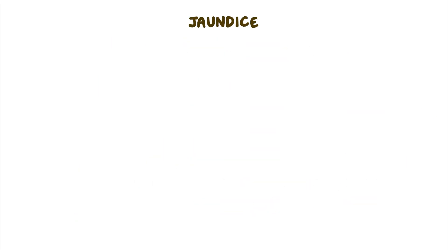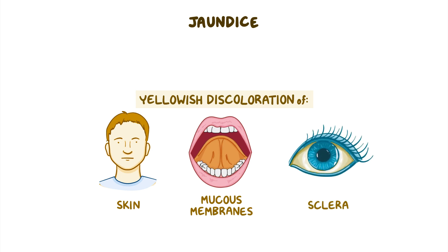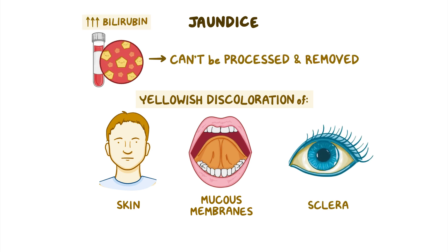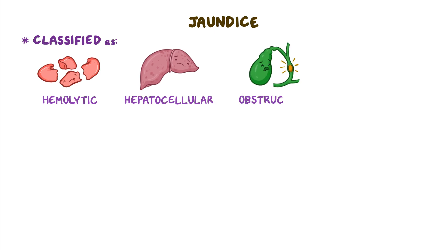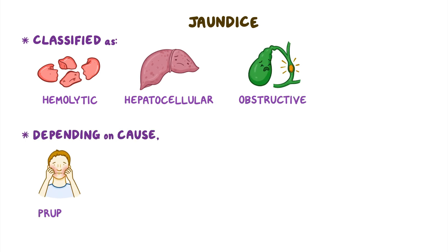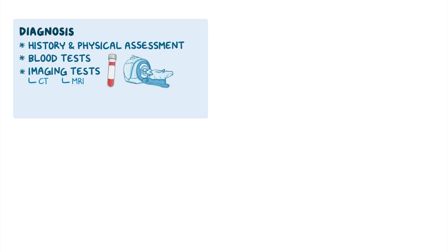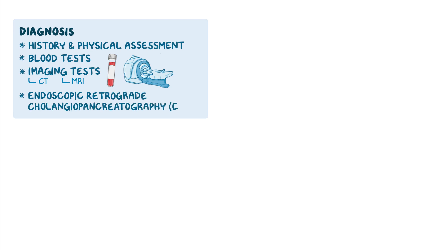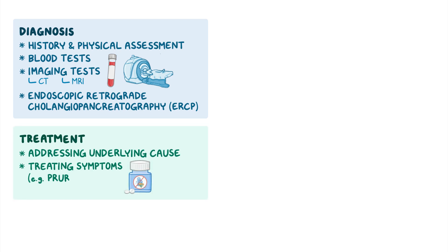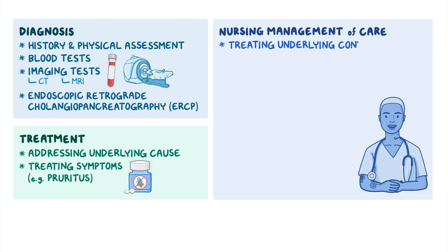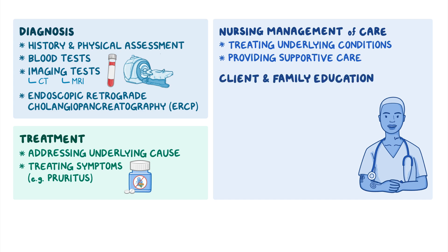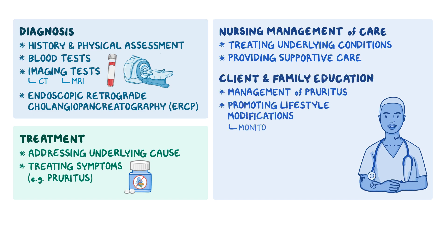As a quick recap, jaundice is characterized by yellowish discoloration of the skin, mucous membranes, and the sclera that happens when excess bilirubin in blood can't be processed and removed from the body, so it ends up depositing in tissues. Jaundice can be classified as hemolytic, hepatocellular, or obstructive. Depending on the cause, jaundice can often be accompanied by pruritus, dark urine, or pale stools. Diagnosis starts with a history and physical assessment, followed by blood tests as well as imaging tests such as CT scan, MRI, and ERCP, in order to identify the underlying cause. Treatment is focused on addressing the underlying cause, as well as treating symptoms like pruritus. Nursing management centers on treating the underlying condition and providing supportive care. Client and family teaching is focused on management of pruritus and promoting lifestyle modifications to monitor their underlying condition.